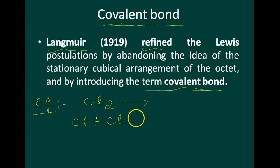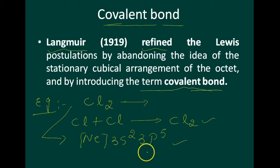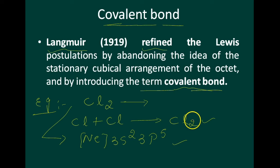By considering two chlorine atoms we can obtain Cl2. The electronic configuration of chlorine is 3S2 and 3P5, so the chlorine atom is only one electron short of the noble gas configuration. The formation of the chlorine molecule can be understood in terms of sharing a pair of electrons between the two chlorine atoms, with each chlorine atom contributing one electron to the shared pair.